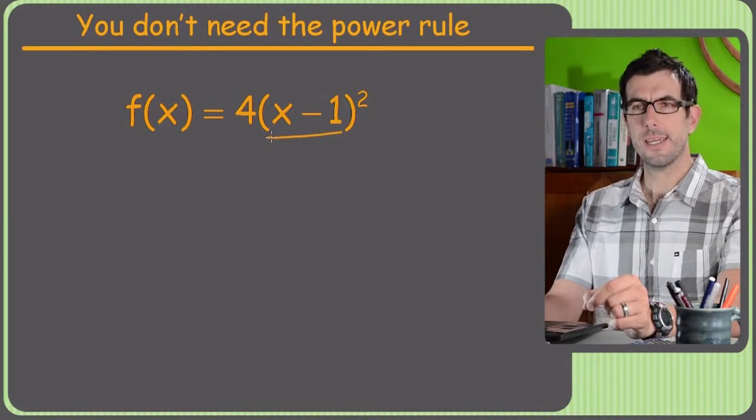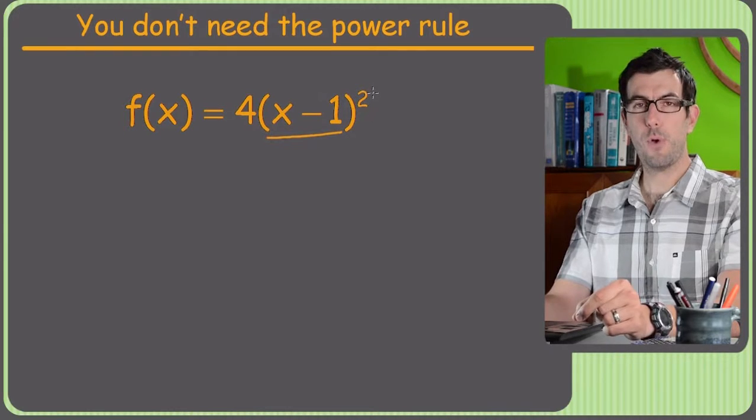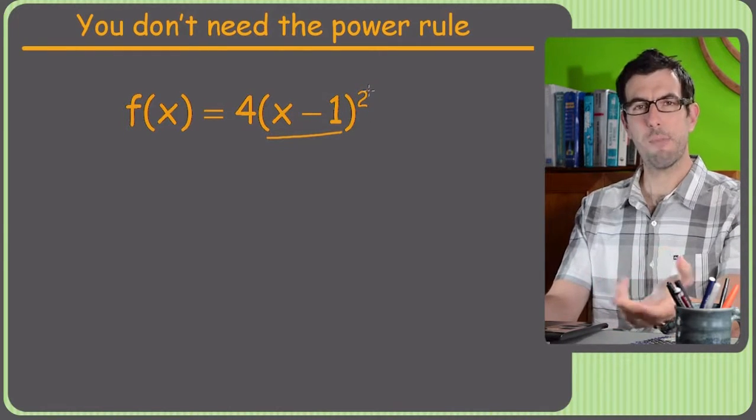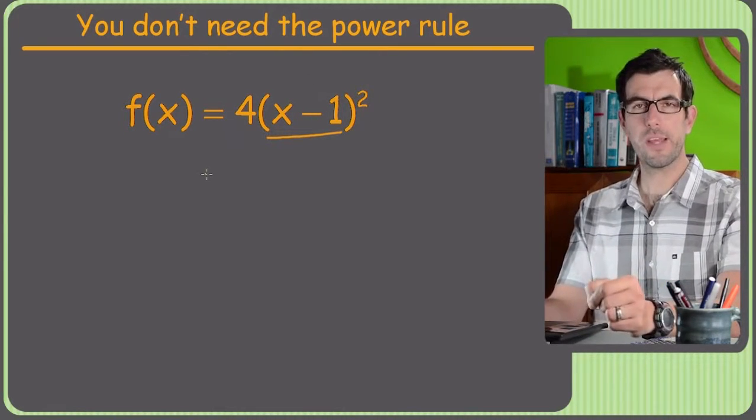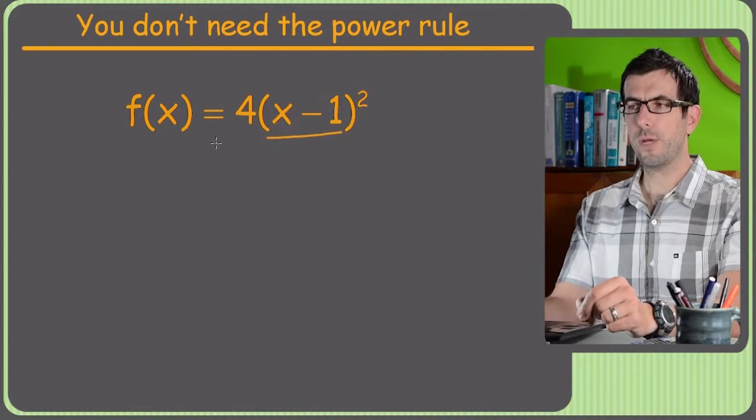So what we'd love to do, and the trick on this one, is just to foil it out first, and then you'll just have a polynomial. Because polynomials are the only thing that's easier to do than the power rule. So what I'm going to do is I'll just leave the 4 out front.